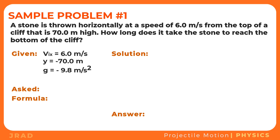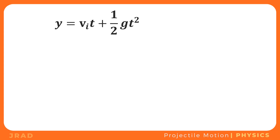We are asked to calculate the time it takes for the stone to reach the bottom. Since we are considering motion along the vertical component, we use y equals viy·t plus one-half g·t². Because the initial vertical velocity is zero, viy·t cancels out, leaving y equals one-half g·t².